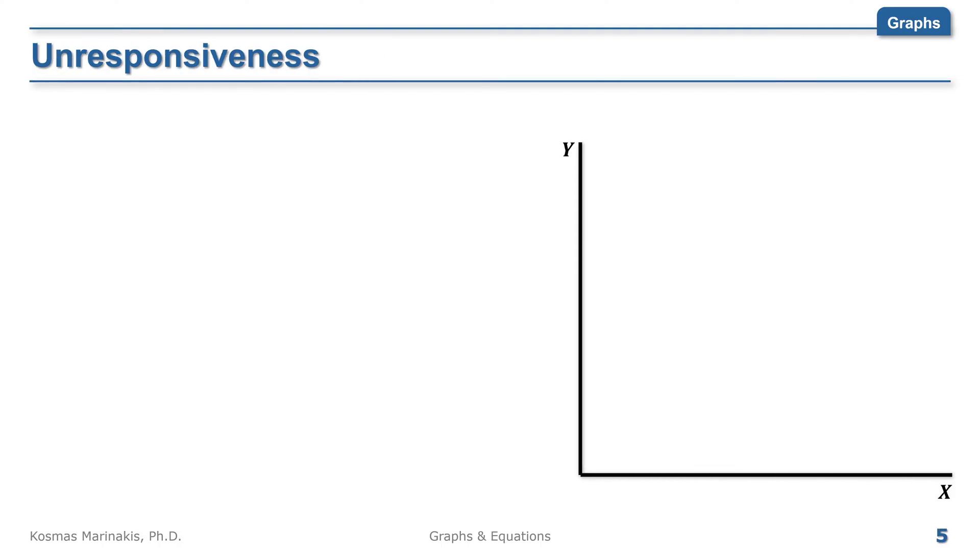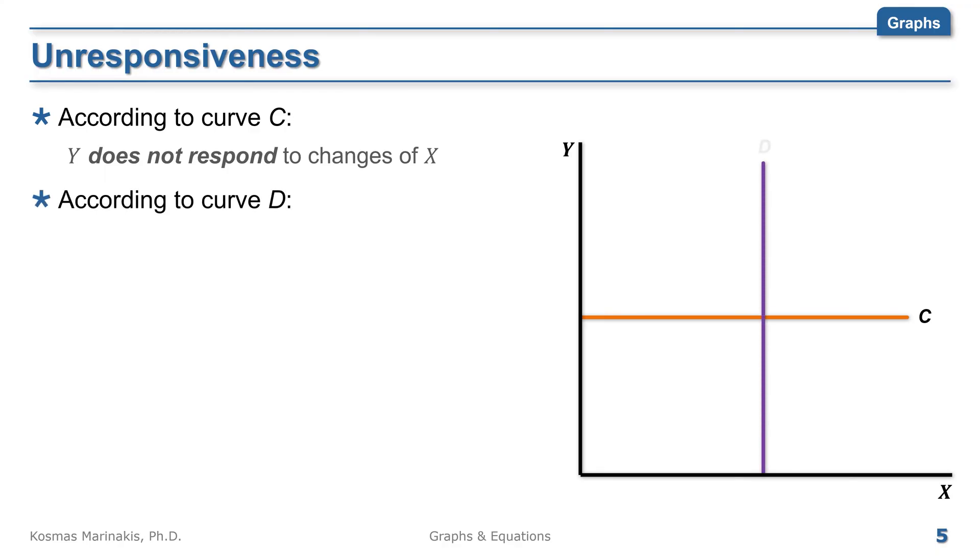Sometimes, the two variables from a graph may be unrelated or non-responsive to each other. For example, a horizontal curve like C shows that changes in the value of x do not affect the value of y.